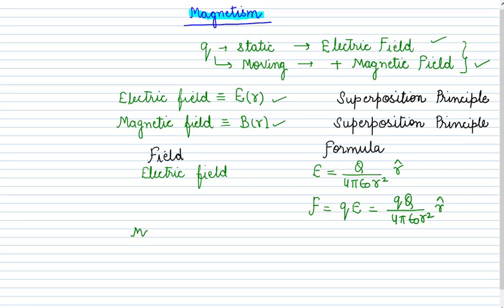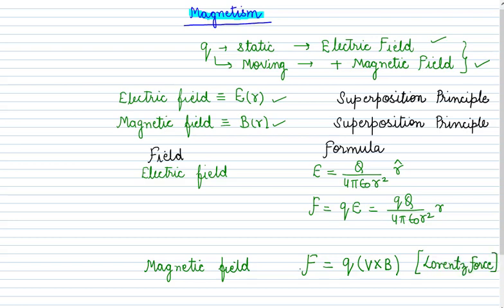Similarly, for the magnetic field, the force F is given as q times v cross B. This force we call the Lorentz force. Let us start with this Lorentz force - what is this force acting due to the magnetic field, how we get this formula, and how to use this formula.